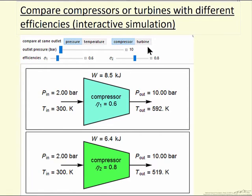And then we can do the same thing for a turbine where we're starting at high pressure and going to low pressure and we're getting work out. And if we have a more efficient turbine we're going to get more work out. Of course this efficiency is relative to a reversible turbine or a reversible compressor. So let's look at the interactive simulation and observe the behavior.